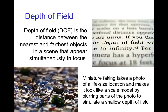Depth of field is the distance between the nearest and farthest objects in a scene that are simultaneously in focus. By manipulating depth of field, we can create a sense of something being small and very close, or large and very far away. This photo appears to be a scale model, but it is actually a photo of a full-size city — by manipulating the blurring to simulate a shallow depth of field, we get the sense that it is a tiny scale model city photographed very close.